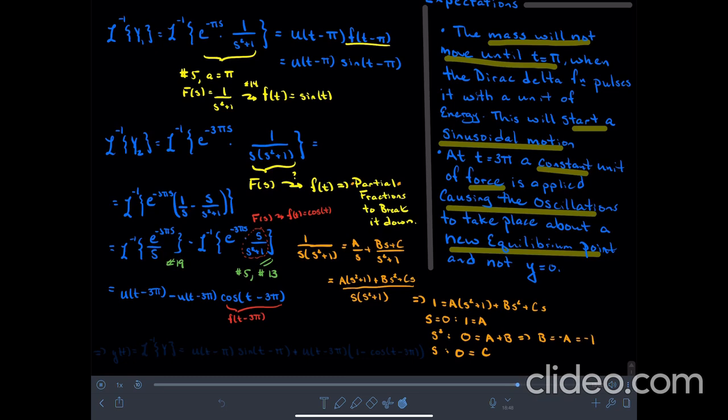So now that we have all that, the implication is that little y of t, well, that's just the inverse Laplace transform of all this capital Y stuff broken into two pieces. And so that's u of t minus pi. So at pi seconds, this thing turns on.